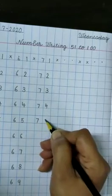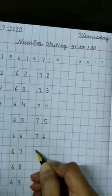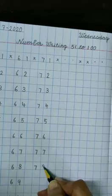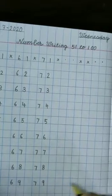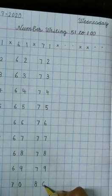After 74, write 75, 76, 77, 78, 79. And in last, write 80. Now again put one cross here.